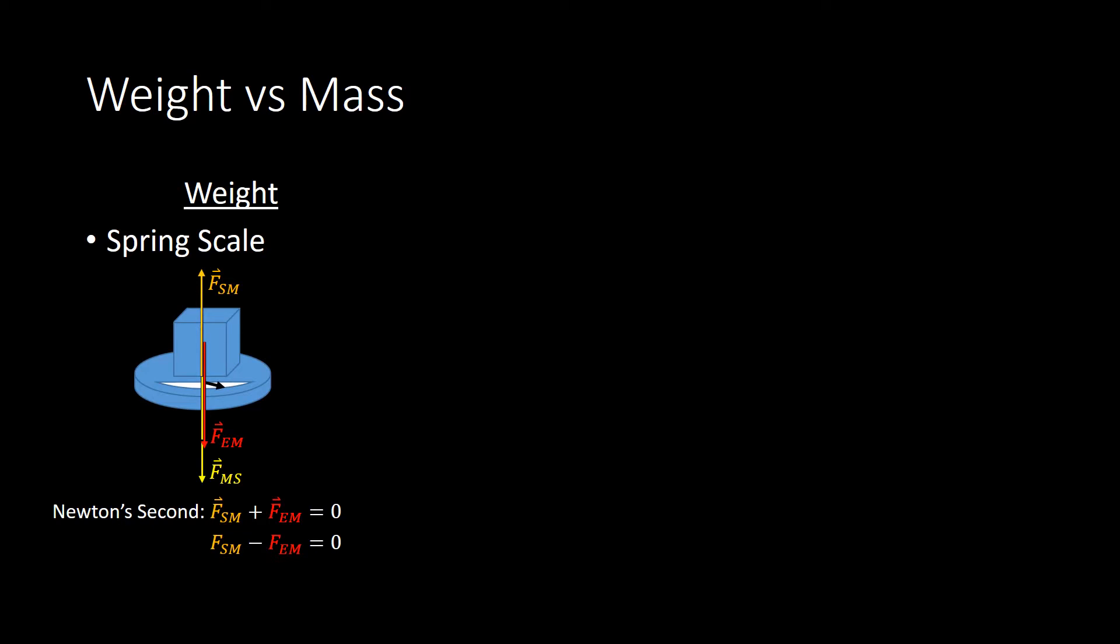But further, we know that F_em, that is to say the gravitational force by the Earth on the mass, is just the mass, m, times the gravitational acceleration, g. So that's now given us the magnitude of F_sm. And in fact, using our convention, since it's positive, we know that F_sm is indeed upwards, in agreement with our drawing.